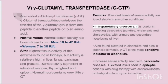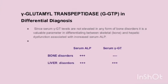Gamma glutamyl transpeptidase plays a very important role in differential diagnosis since serum gamma GT levels are not elevated in any form of bone disorders. It is therefore a valuable parameter in differentiating between skeletal (bone) disorders and hepatic dysfunction associated with increased serum alkaline phosphatase. Since ALP levels are elevated in both bone and liver disorders whereas gamma GT is elevated only in liver disorders, gamma GT plays a very important role in diagnosing liver dysfunction.